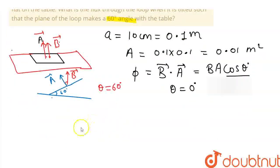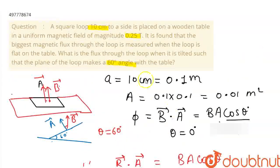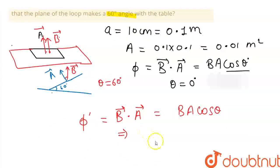So now the flux is equal to B.A equals BA cos theta. Magnetic field magnitude is 0.25 tesla. The area we calculated is 0.01 into cos theta, which is cos 60.